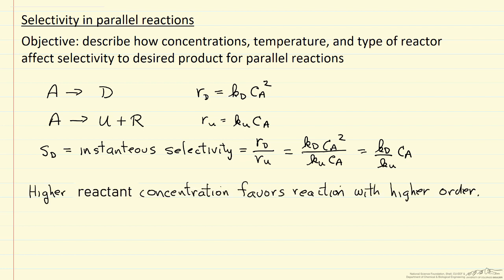Now the other thing that is going to affect selectivity is the value of these rate constants. They change with temperature. And in general, the different reactions have different activation energies, which means they're going to change at different rates with temperature.